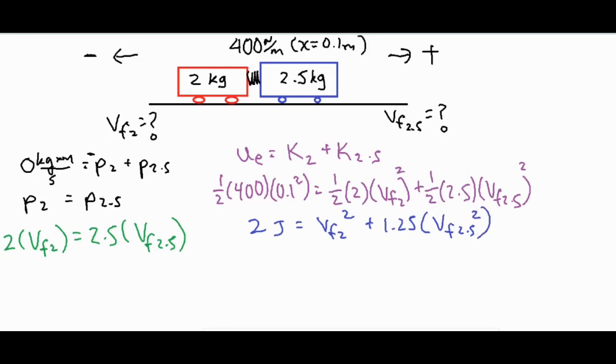What we have is the elastic potential energy which is one half k x squared and that comes up to just two joules of energy, equals the one half mv squared for the two kilogram and the 2.5 kilogram cart. I just simplified it a little bit. One half times two is just one, so this basically has no coefficient or one in front of it. Then I just split the 2.5 and a half so this one has a coefficient of 1.25.